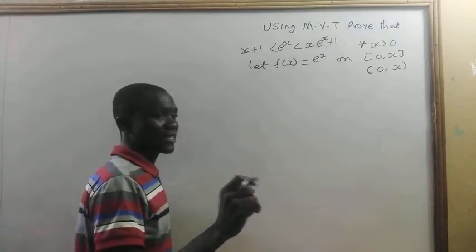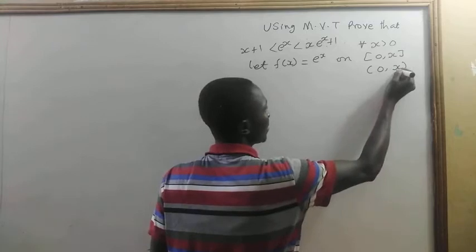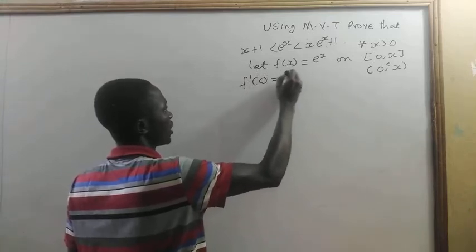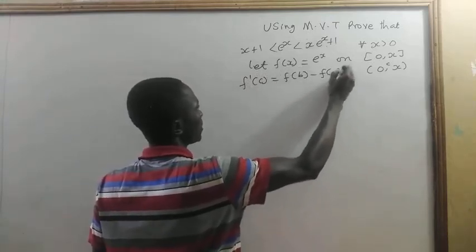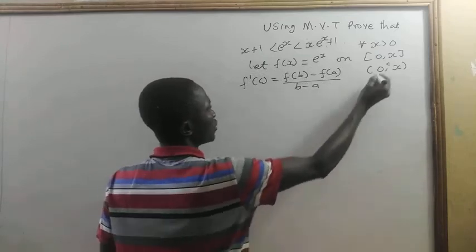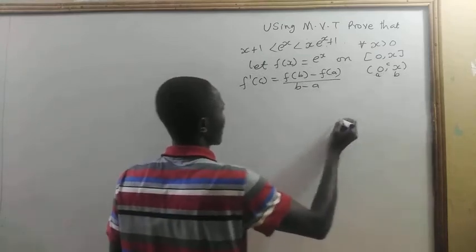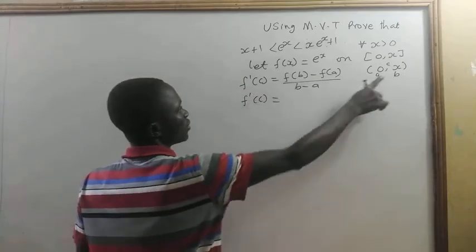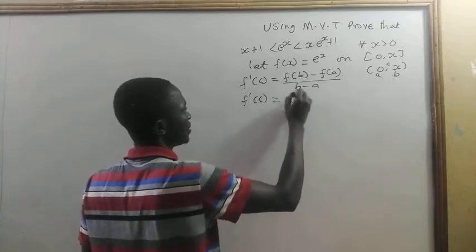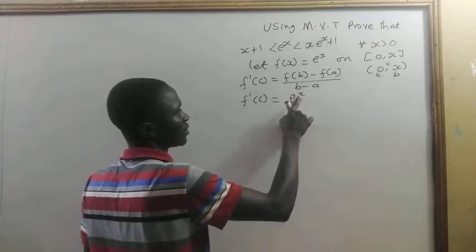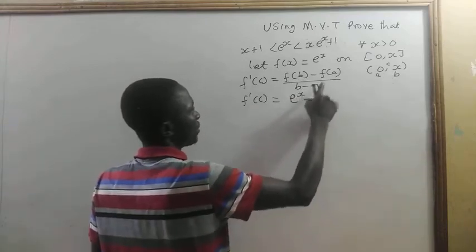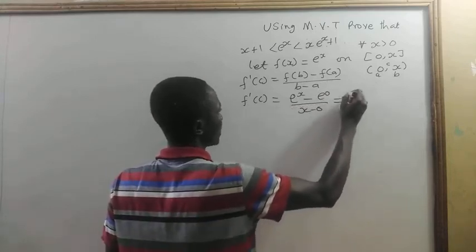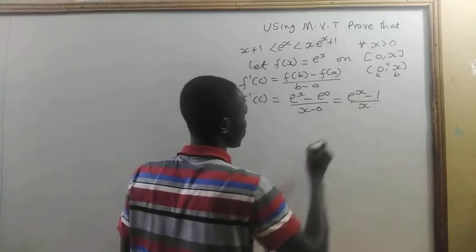Then there exists a number c between 0 and x such that f prime of c is equal to f of b minus f of a divided by b minus a. Here a is 0 and b is x. So f prime of c equals f of x minus f of 0, which gives us e to the power x minus e to the power 0, divided by x minus 0, which simplifies to e to the power x minus 1 divided by x.